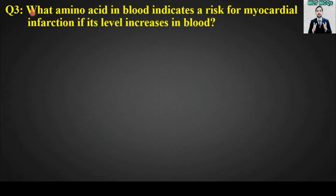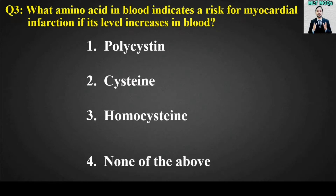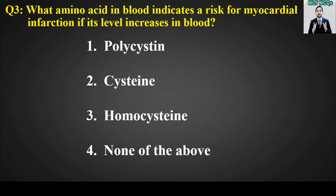MCQ number three: What amino acid in blood indicates a risk for myocardial infarction if its level increases in blood? Options are: polycystine; cysteine; homocysteine; none of the above. The right answer is option number three — homocysteine is the amino acid in blood that indicates a risk for myocardial infarction if its level increases.